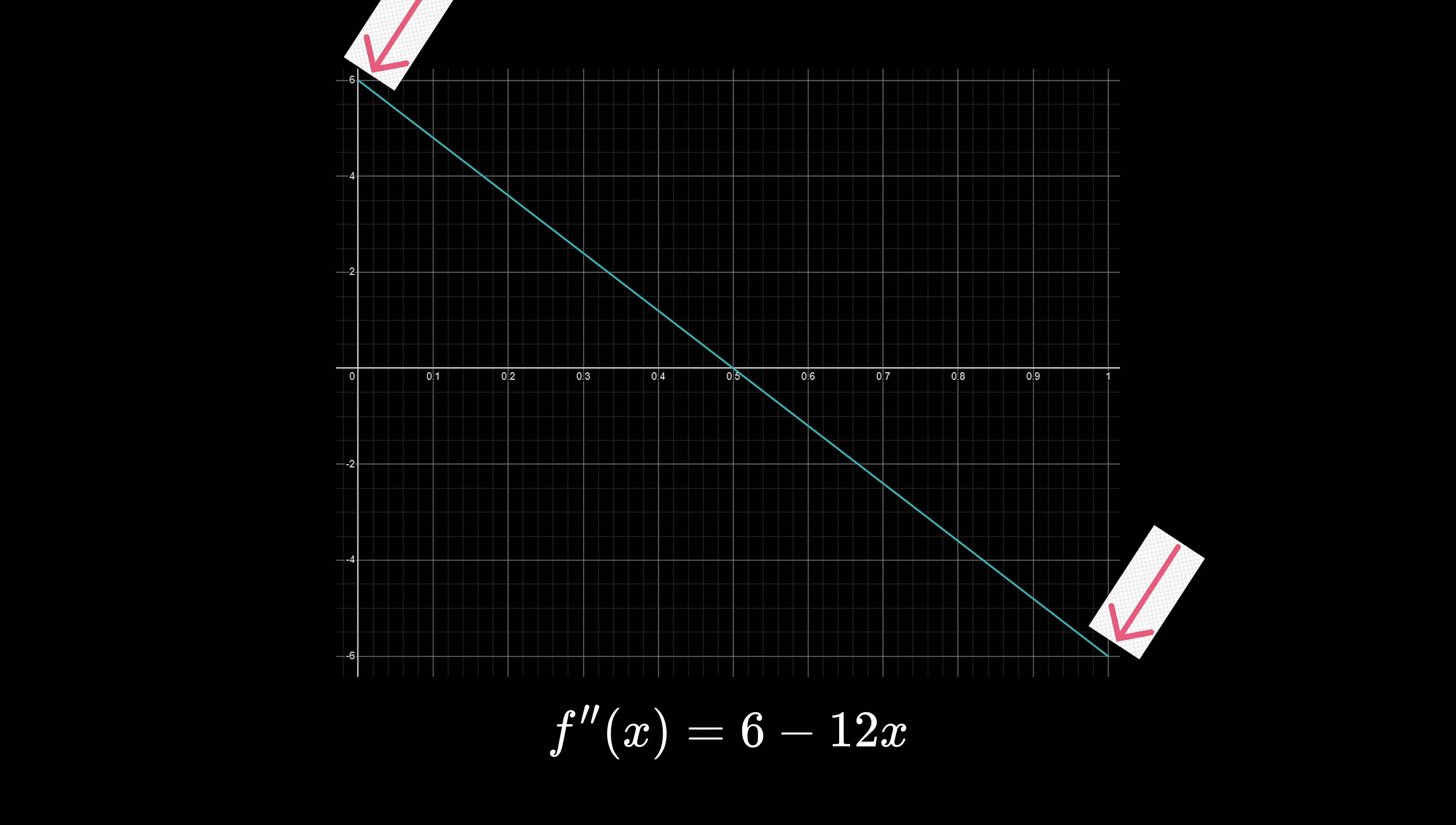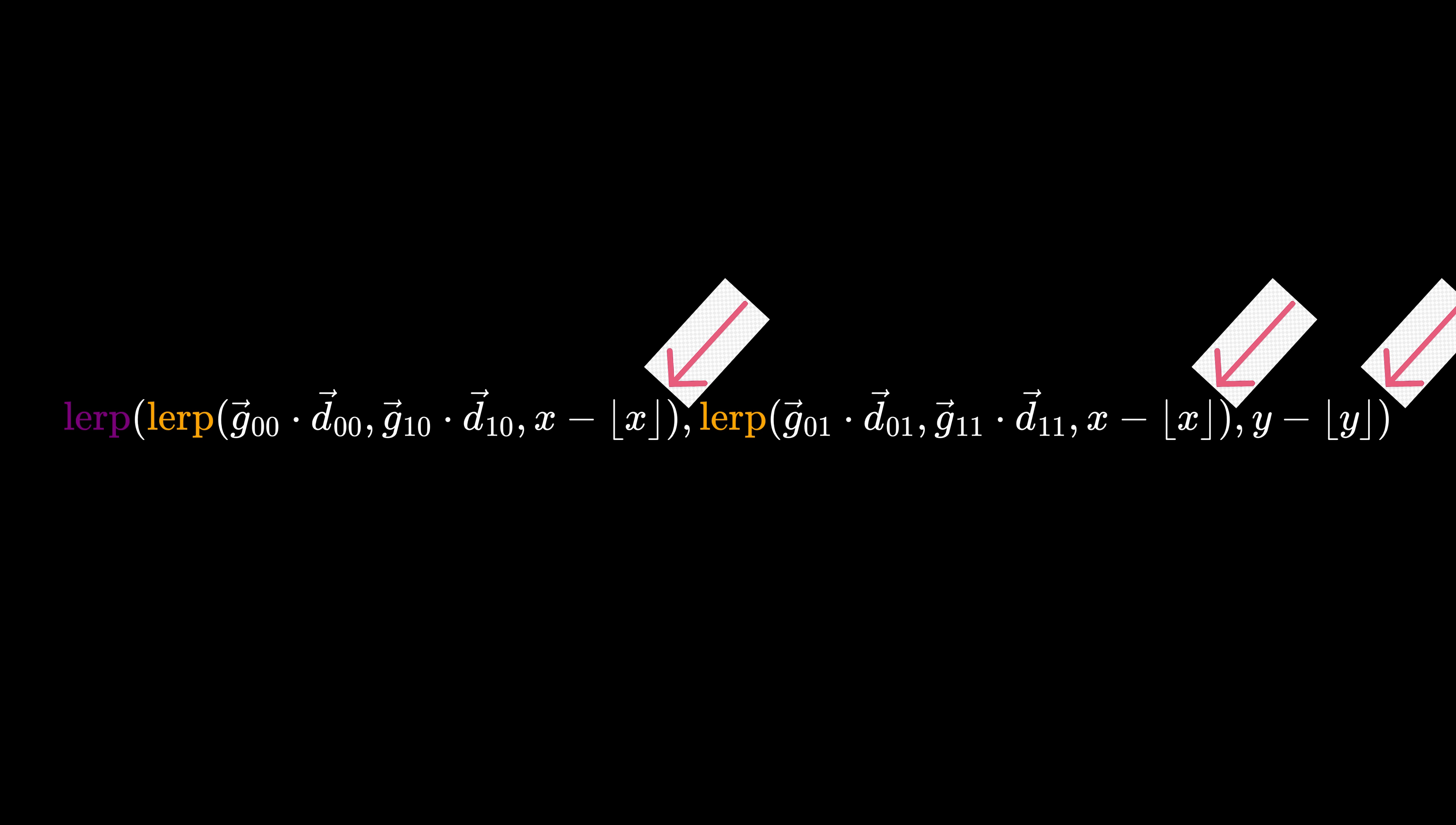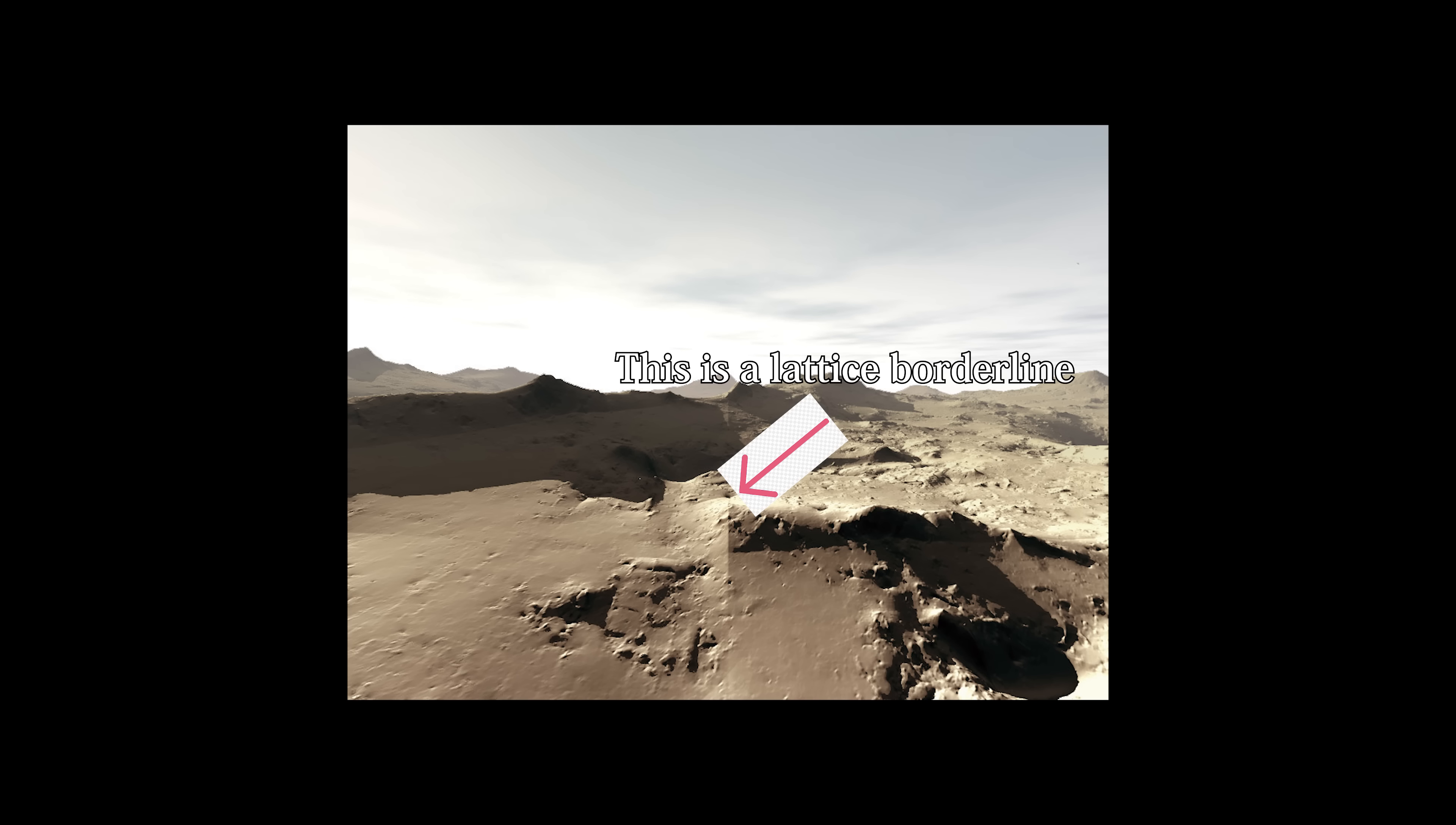The change of the gradient at one border of a lattice cell does not match up with the change of the gradient on the opposite side of the border, causing the discontinuity. To fix this, we must use a different interpolant.